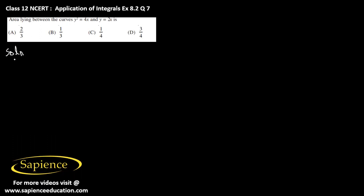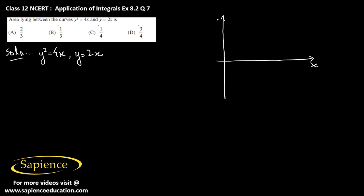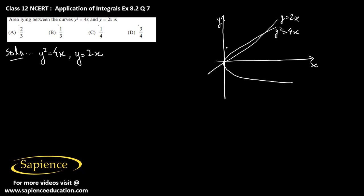Let us solve this question. The equations of the curves are y squared equals 4x and y equals 2x. If we draw the approximate graphs, this is the x-axis and this is the y-axis. The graph of y squared equals 4x is a parabola, and the graph of y equals 2x is a straight line. We are asked to find the area lying between the curves.